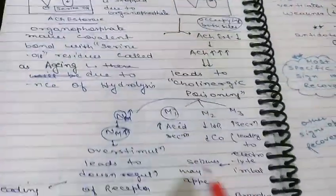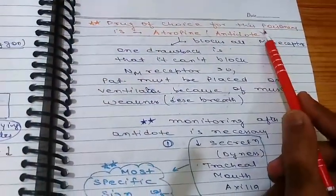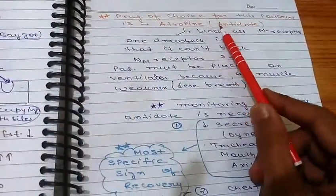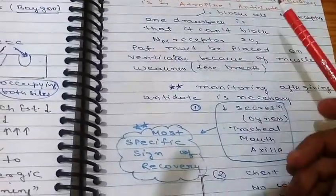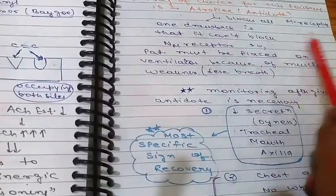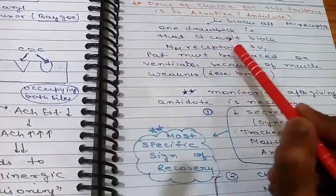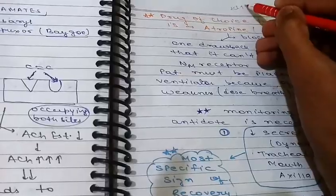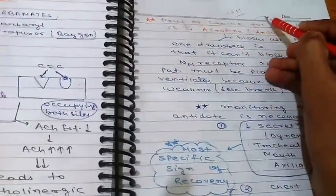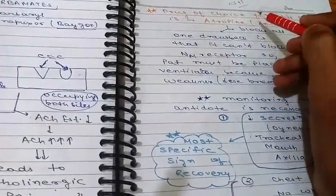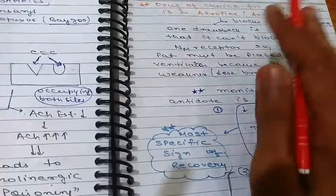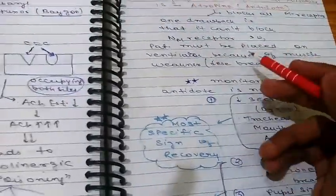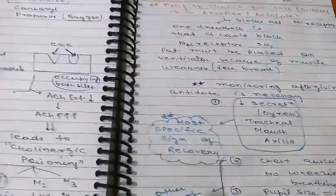The drug of choice for this poisoning is atropine — if a person has taken insecticides or nerve gases, atropine is given as the antidote. Atropine blocks all M receptors. One drawback is that atropine cannot block NM receptors, so it cannot address the cholinergic crisis at the neuromuscular junction. Atropine will block acetylcholine at M receptors so stimulation will decrease. Because atropine cannot block NM receptors, the patient must be placed on a ventilator due to muscle weakness.